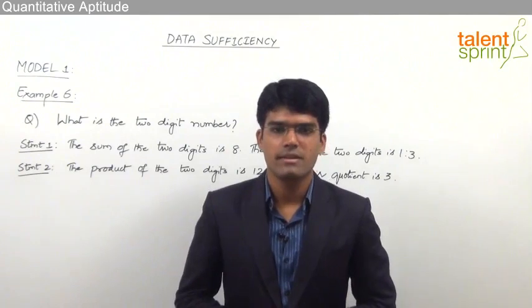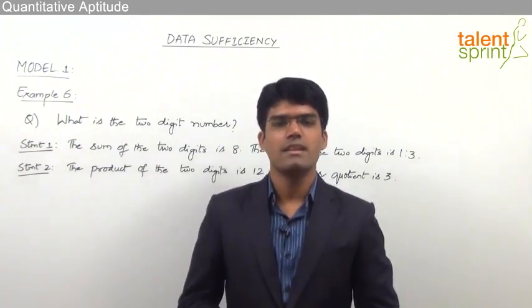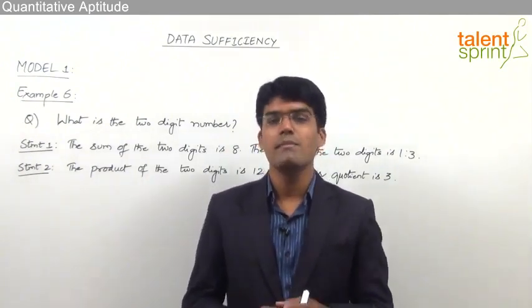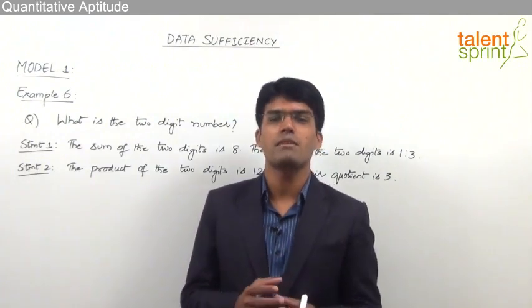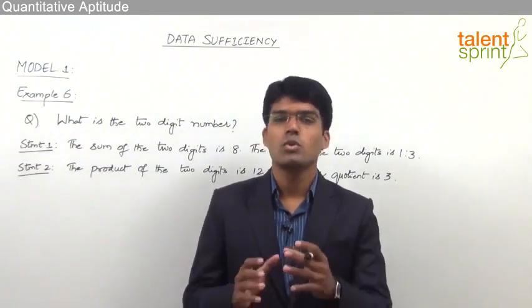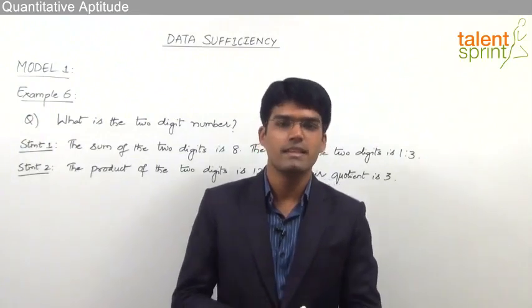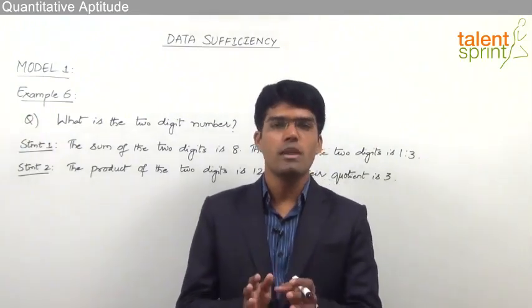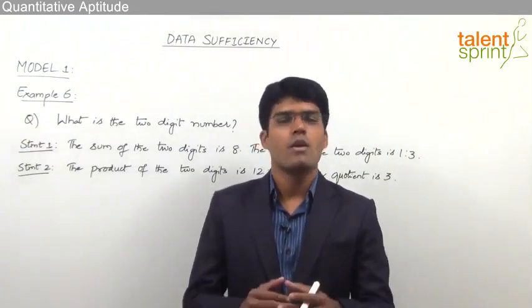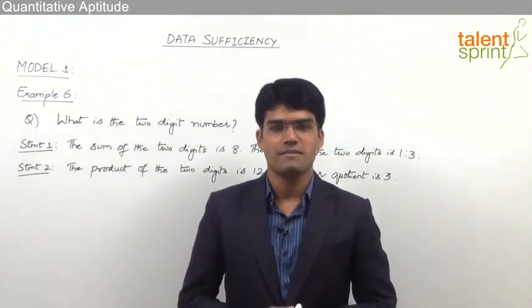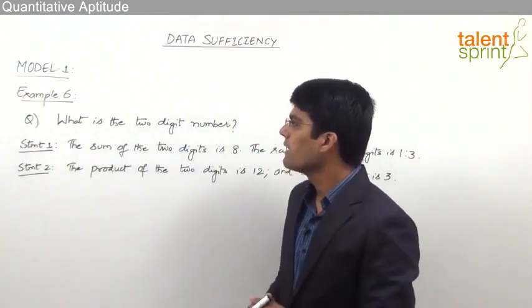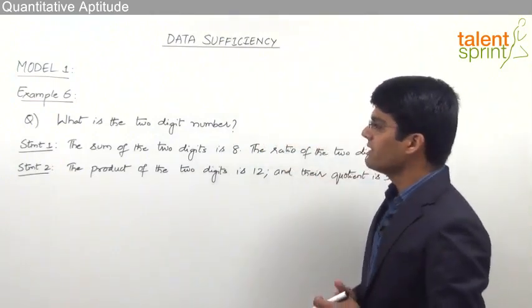Generally, the questions asked from data sufficiency are very easy to solve, but sometimes there may be a twist in the question, or the given question may be tricky enough that we get a wrong answer. So though the questions of data sufficiency are easy, we have to pay proper attention to the given question and the statements while solving. Let us look at one such example.